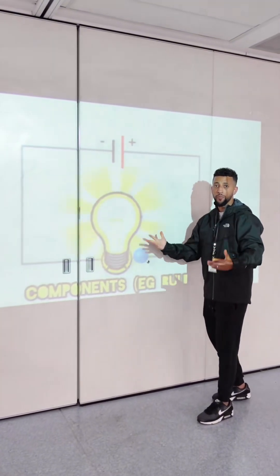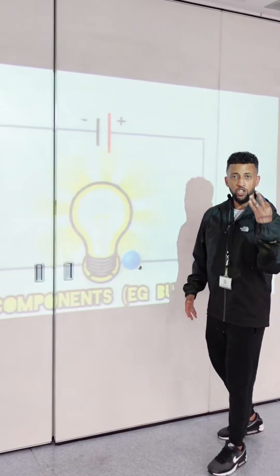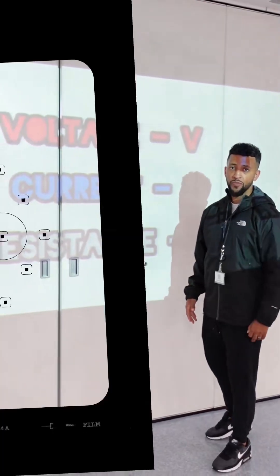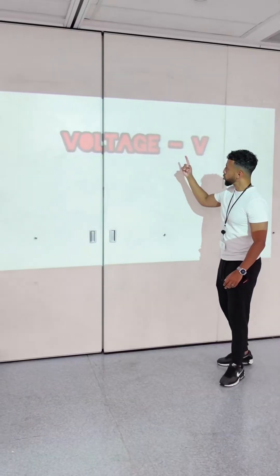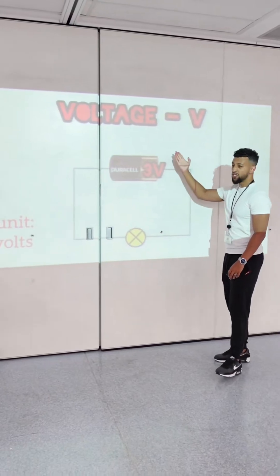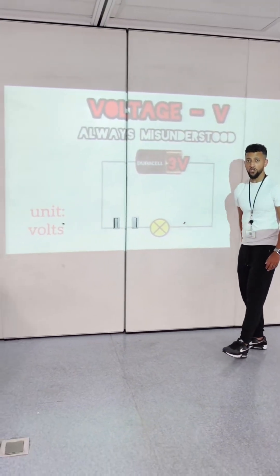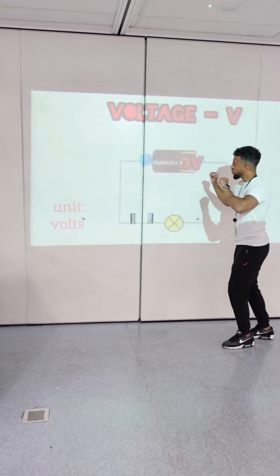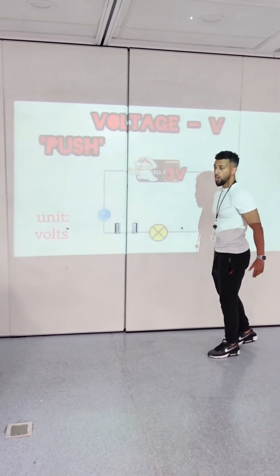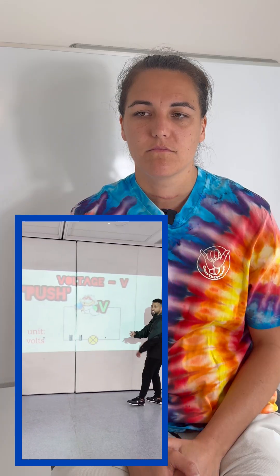This bulb lights up in a moment — to understand, you need to know these words. The first word is voltage; it's always misunderstood. It measures the push of electrons — higher volts, then greater the push.